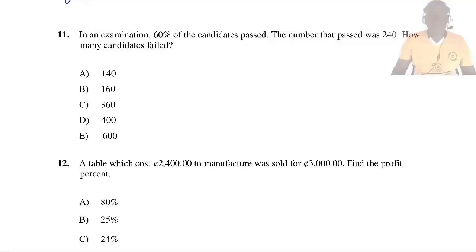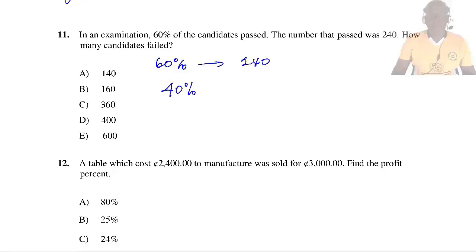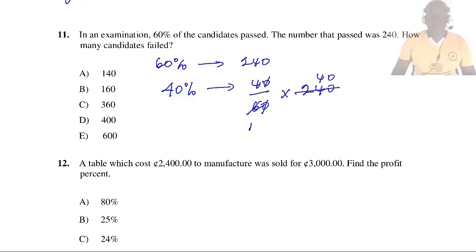Question 11: In an examination, 60% of the candidates passed and the number that passed was 240. How many candidates failed? The percentage that failed = 100% − 60% = 40%. So the number that failed = (40/60) × 240 = 160. So the answer is B.